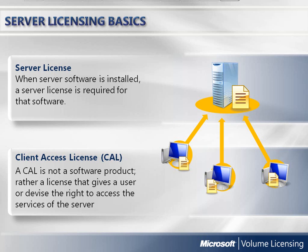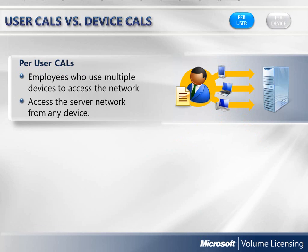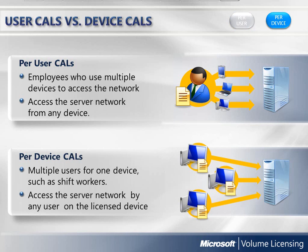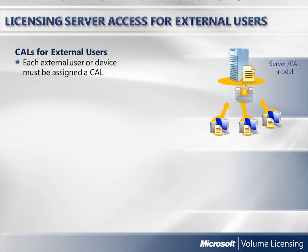If you would like to allow your business partners or customers to access your network, you have two licensing options: acquire CALs for each of your external users, or acquire an external connector license for each copy of the software being accessed by your external users. Per user CALs are ideal for organizations that have employees who use multiple devices to access the network — they allow licensed users to access the server network from any device. Per device CALs are ideal for organizations that have multiple users for one device, such as shift workers, and allow any user to access the server network on any licensed device.